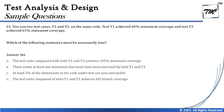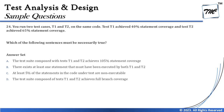Question number 24 says: you run two test cases, T1 and T2, on the same code. Test T1 achieves 40% statement coverage and test T2 achieves 65% statement coverage. This question is related to statement coverage, so we should recall that statement coverage is about statements getting executed — not worried about outcomes like true and false — every single statement should be covered. The question asks which of the following statements must be necessarily true about this achievement.